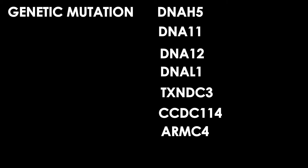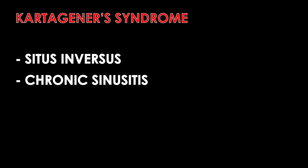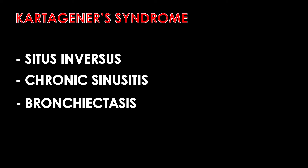In this video, we will refer to a more specific form of PCD known as Kartagener syndrome. Kartagener syndrome is a triad involving three types of disorders: situs inversus, chronic sinusitis, and bronchiectasis.